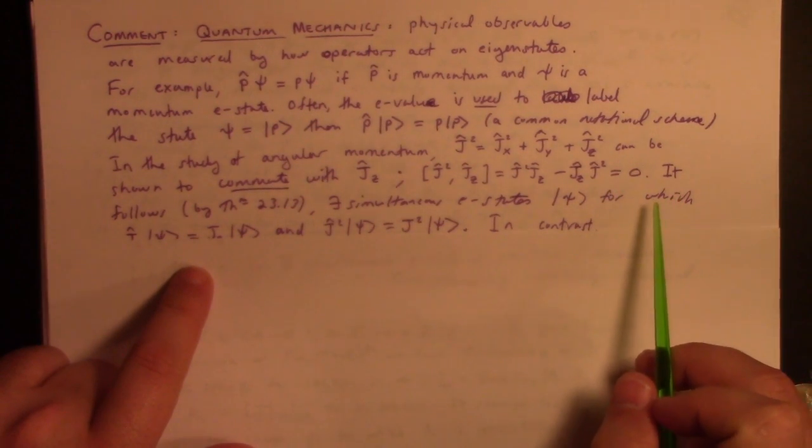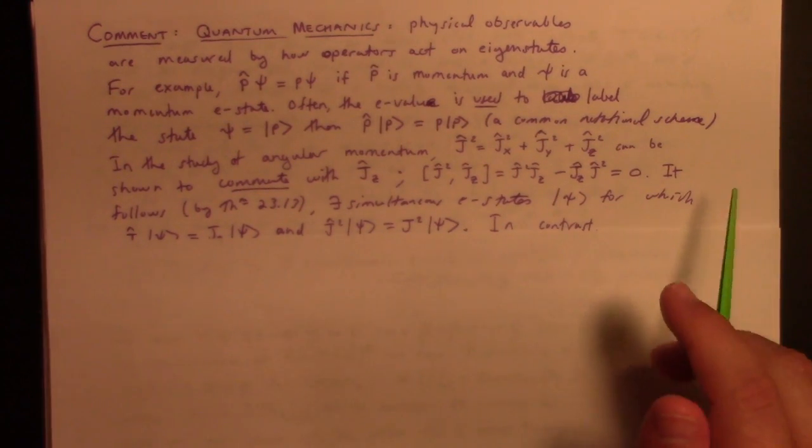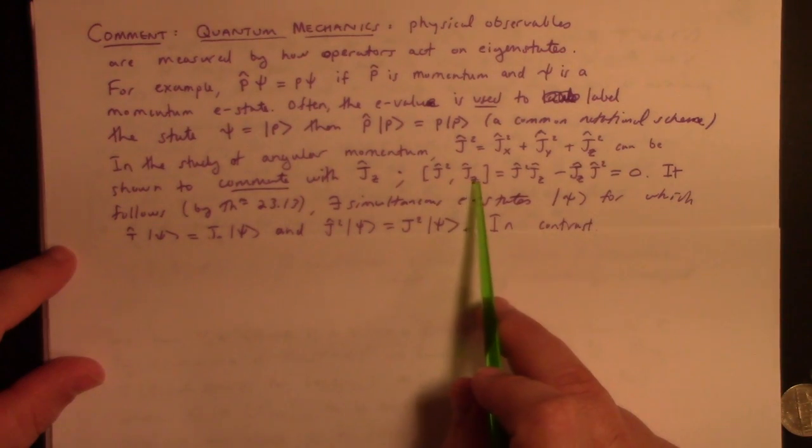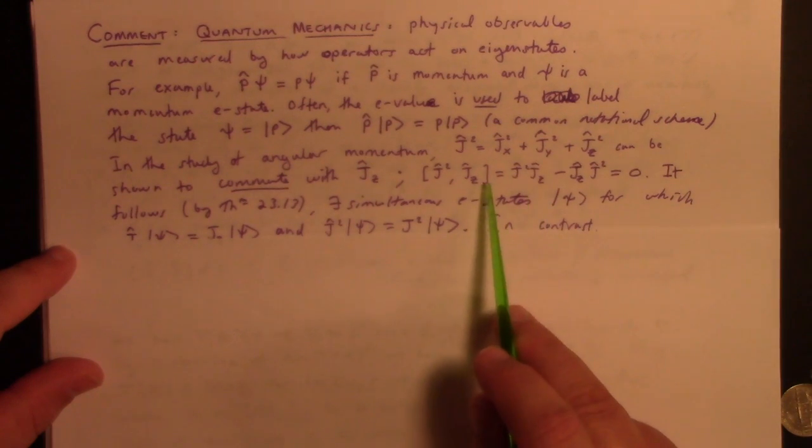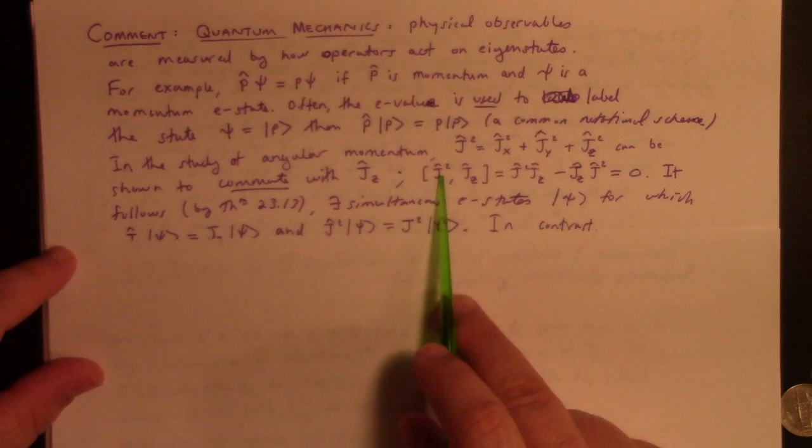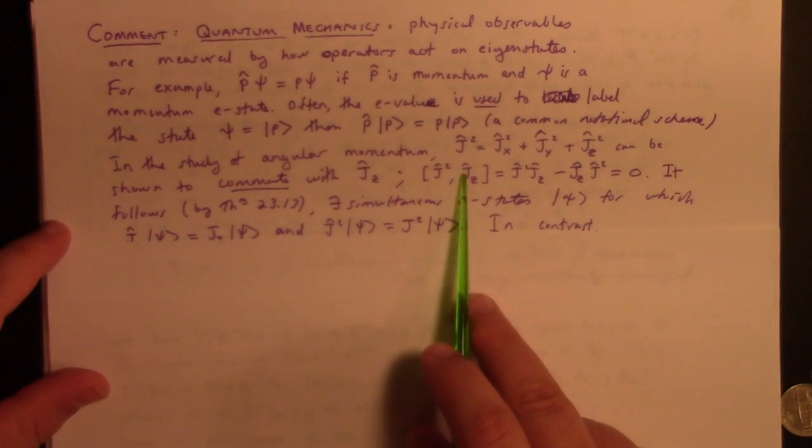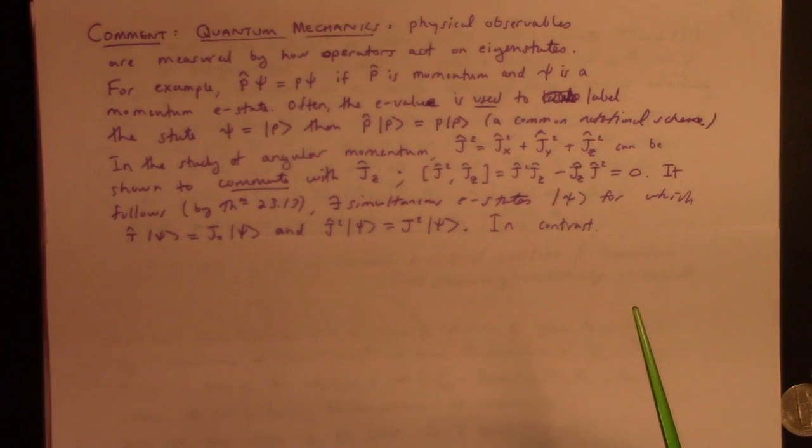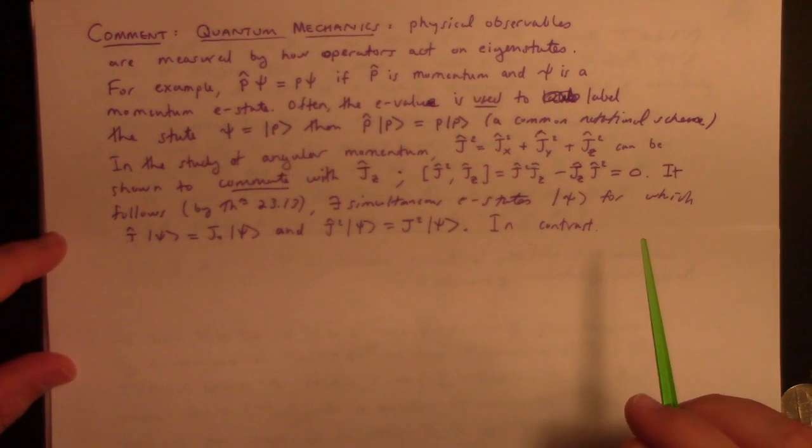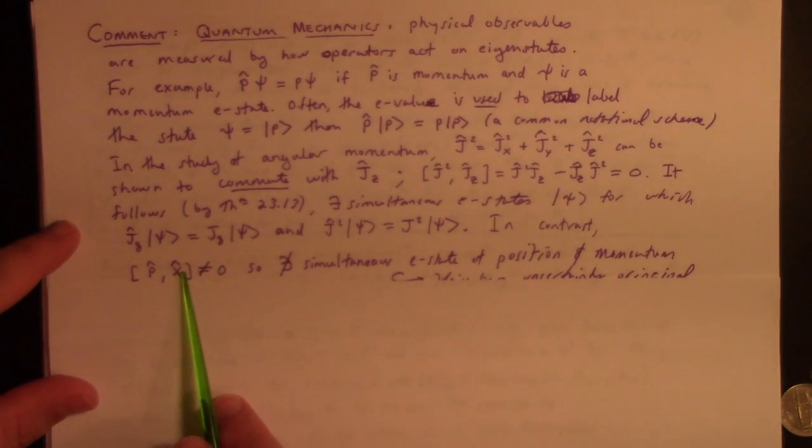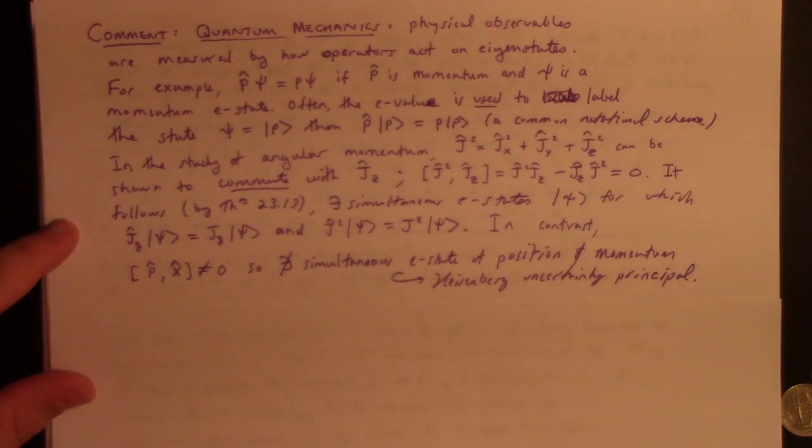So, the eigenvalue is used to label the state. So, this typical notation would be like psi is equal to this ket with a p in it. So, p acting, p-hat acting on ket p would be p ket p. This is a common notational scheme. Another example, in the study of angular momentum, you have the total square of the angular momentum, which is jx-squared plus jy-squared plus jz-squared. You can show that that commutes with the z-th component of angular momentum. I have not shown that here, but you could show it. Well, anyway, in other words, the commutator, j-squared with jz, is zero. And, is jz a smooth operator? I think technically yes. Yes, I think it is.